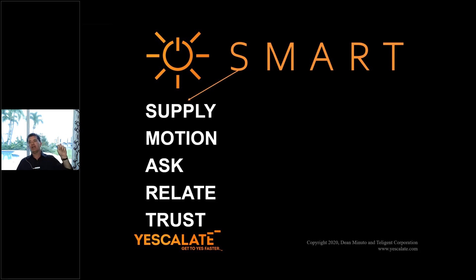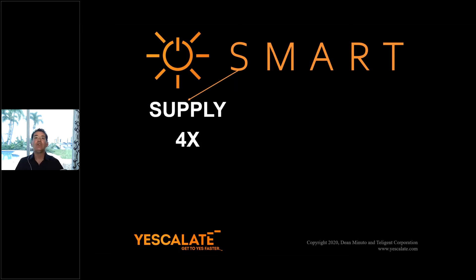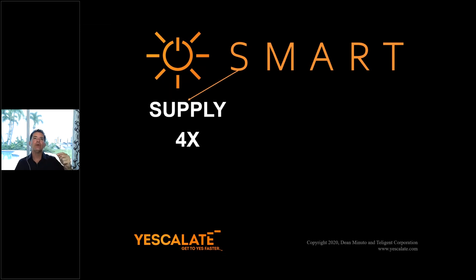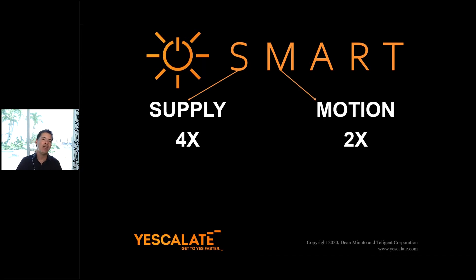Today I'm going to focus on the two most powerful. I'm going to focus on supply, which research suggests, if you apply the correct behaviors, can increase your effectiveness four times — four X. Compliance to a request goes up four times when we apply the forcing mechanisms of supply. They are limited numbers, deadlines, and penalties — and I'm going to talk to you about a very specific way to do that.